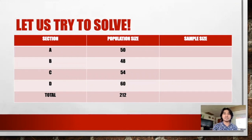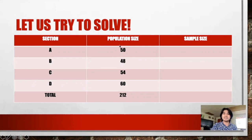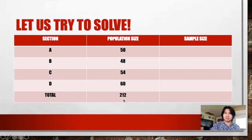For example, you want to know the sample population size of Grade 12. I have here sections A, B, C, and D. The population size is the total number of students per class. Section A has 50 students, Section B has 48, Section C has 54, and Section D is 60 — that's a total of 212 students.